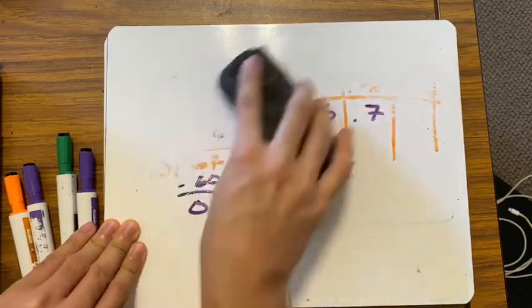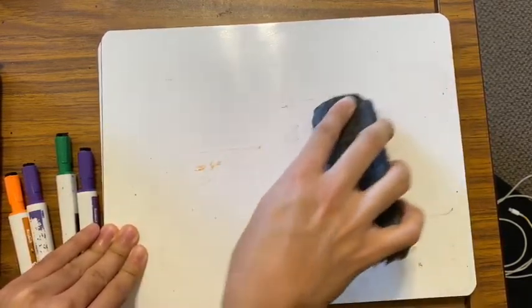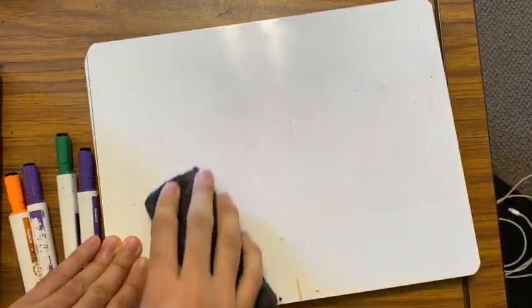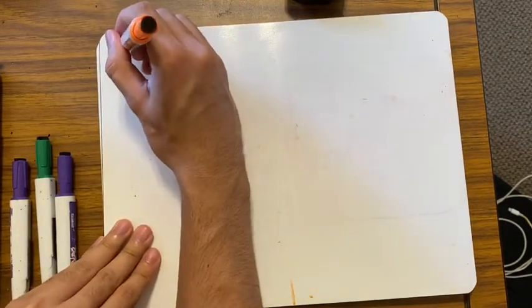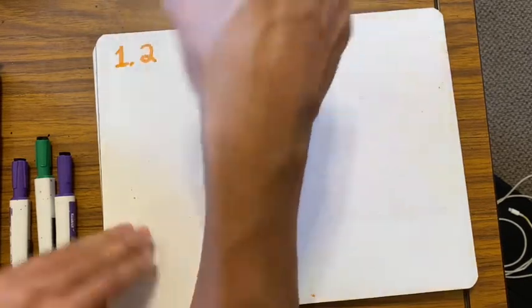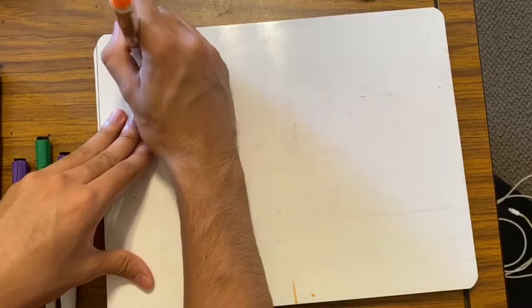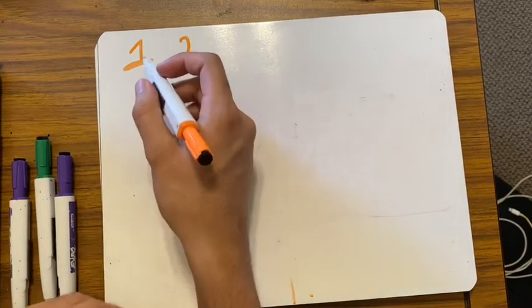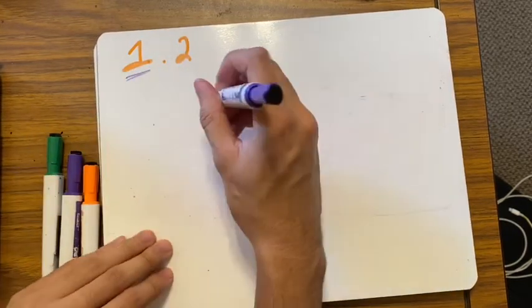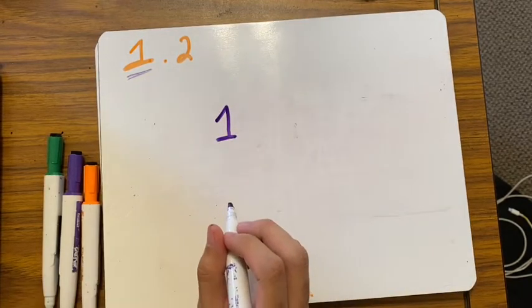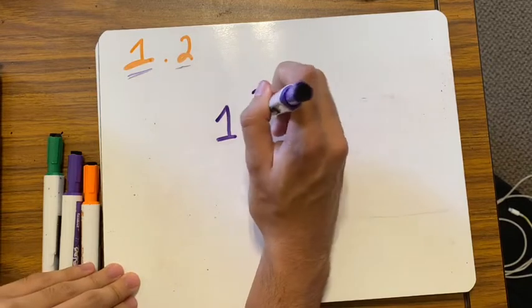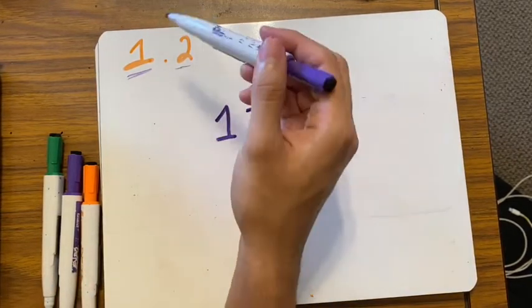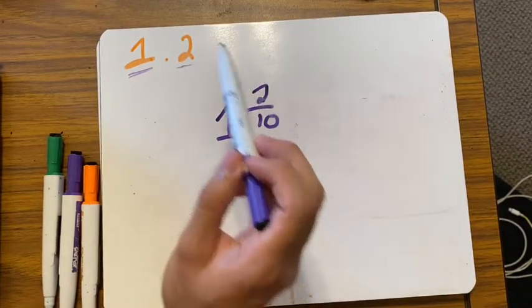Now let's go the other way — start with a decimal and switch it into a fraction. Let's say we have 1.2. Since you have a whole number, that's your whole number: one. What place value is your two in? It's in the tenths place. So I have two tenths. I think going from a decimal to a fraction is easier than going from a fraction to a decimal.